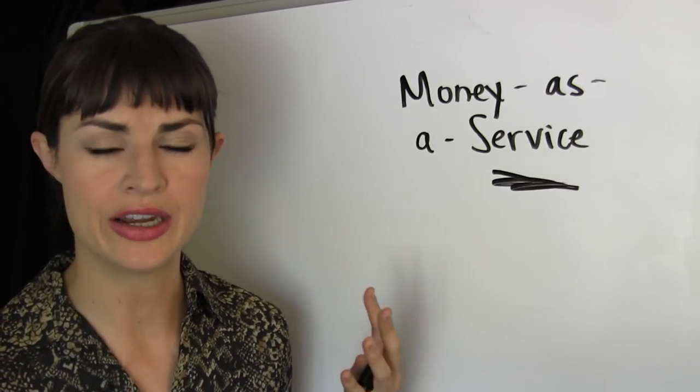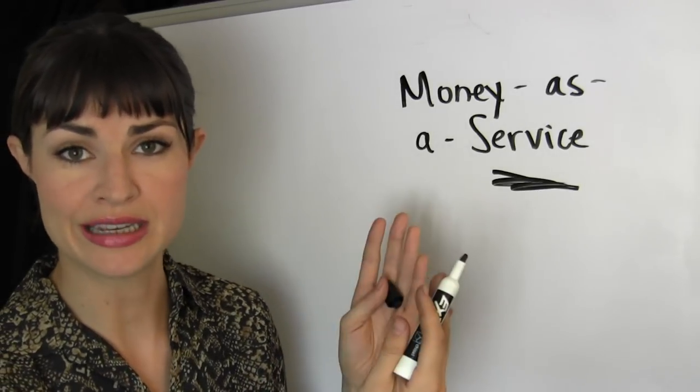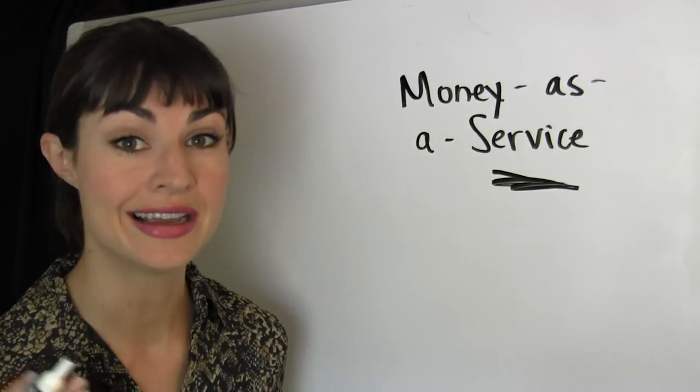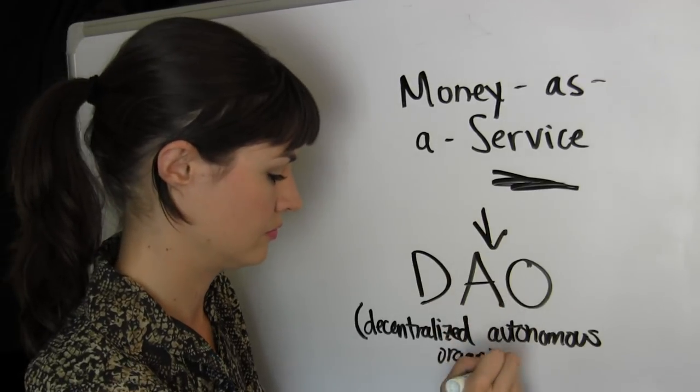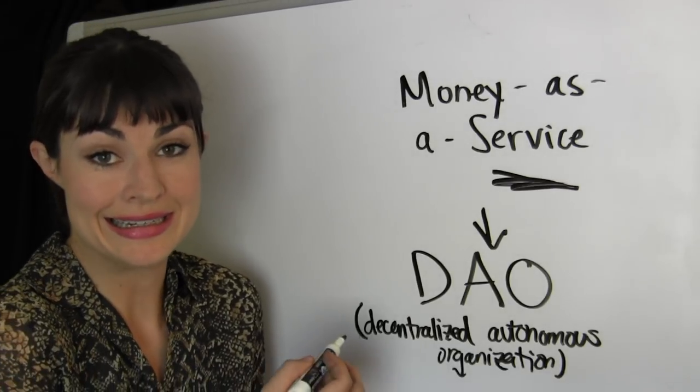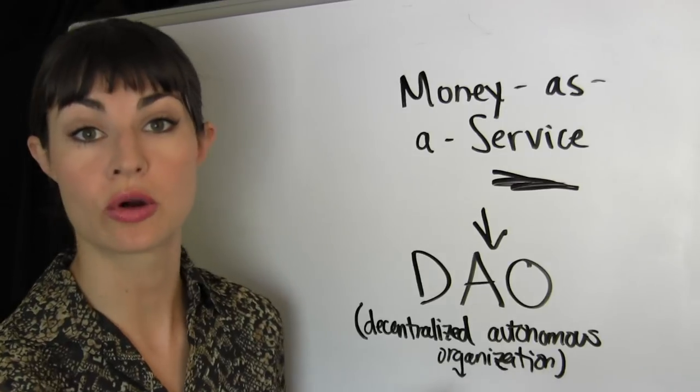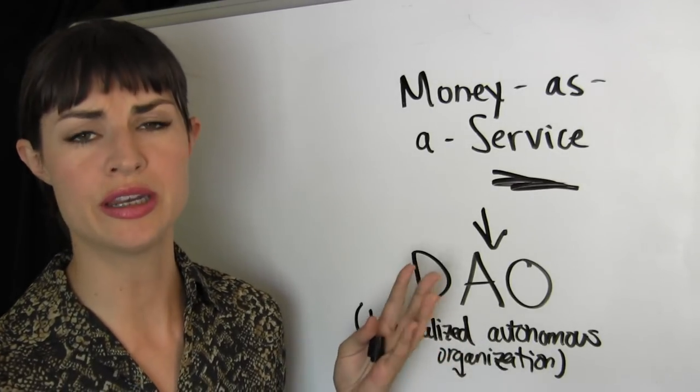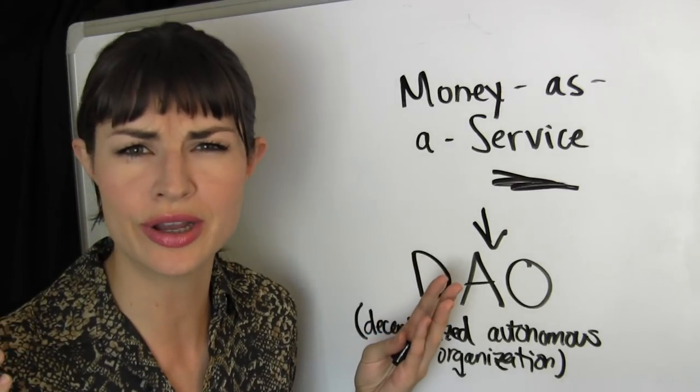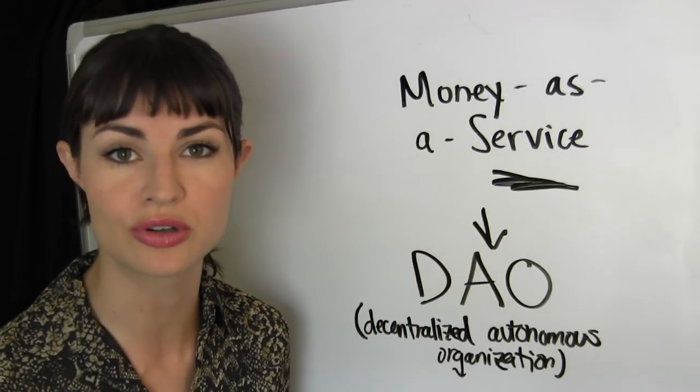And what's more, we have to find a way to fund the people who put these code-based changes into place. In other words, we have to function as a DAO, a decentralized autonomous organization. It's a fancy word for basically a company that's run in a whole new kind of way that doesn't really have a CEO, but is rather made up of volunteers from all over the world.